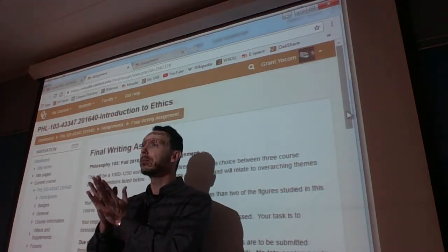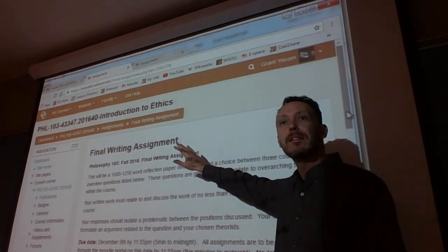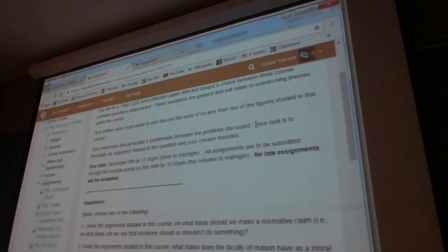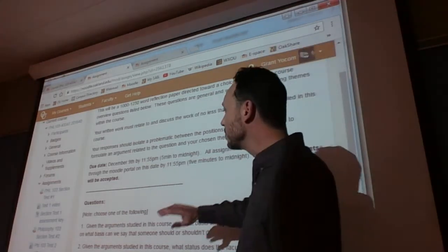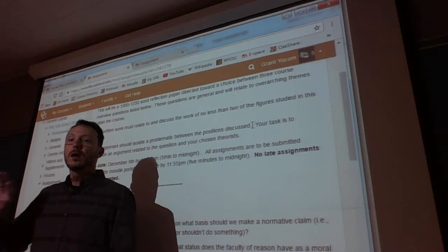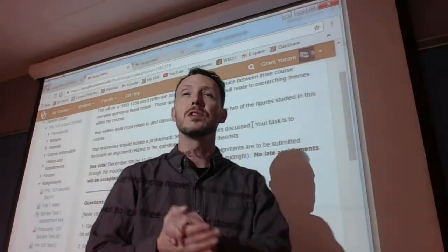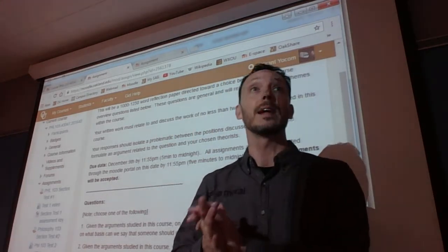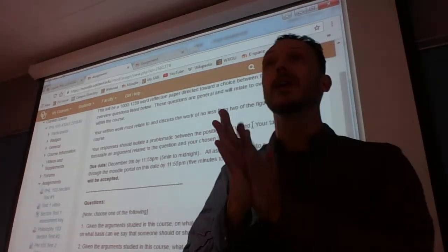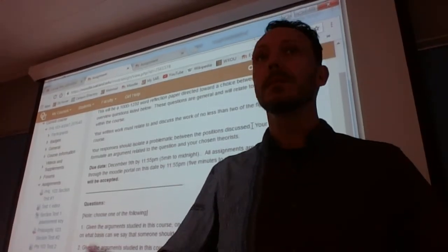The final writing assignment is due December 9th at 11:55 PM. You're posting your responses to Moodle. It's a 1,000 to 1,250 word reflection paper directed towards these course overview questions, which I've left general with the expectation that you'll refine them to reflect what you're interested in with regard to the material we've studied. You're to pick no less than two theorists, any two of the six that we've studied.